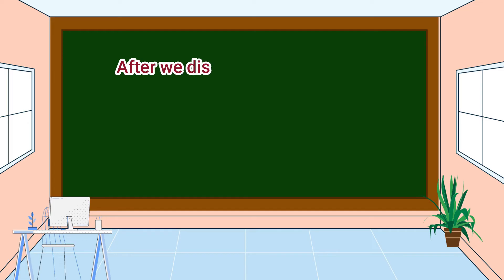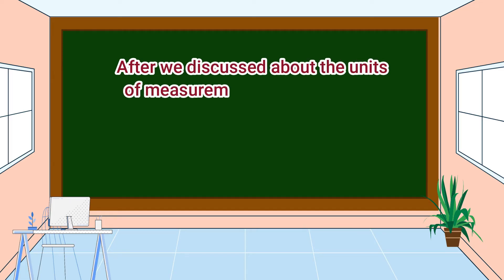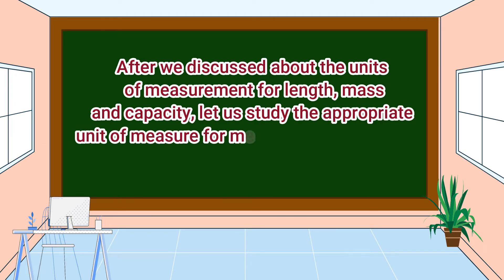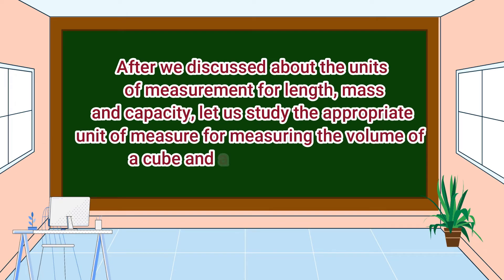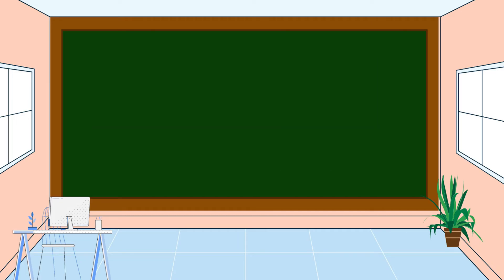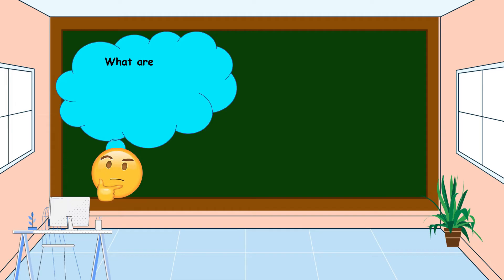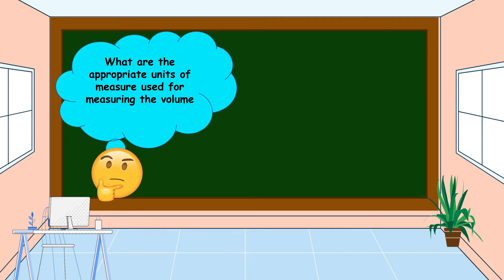After discussing the units of measurement for length, mass, and capacity, let us now study the appropriate unit of measure for measuring the volume of a cube and a rectangular prism. What are the appropriate units of measure used for measuring the volume of a cube and a rectangular prism?